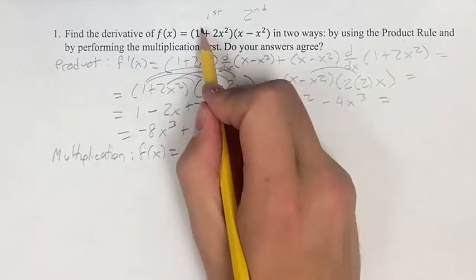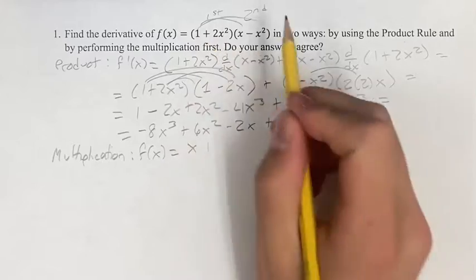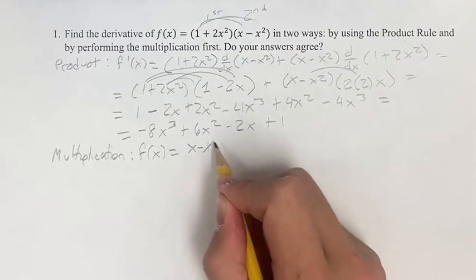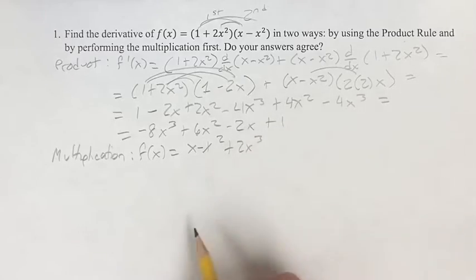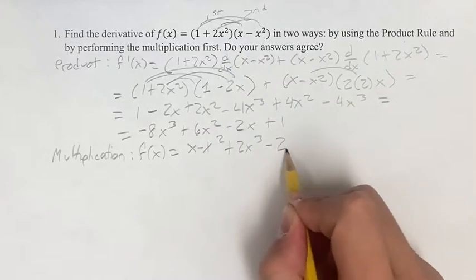First of all, f(x) is equal to x - x² + 2x³ - 2x⁴.